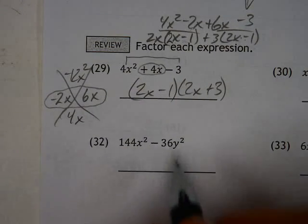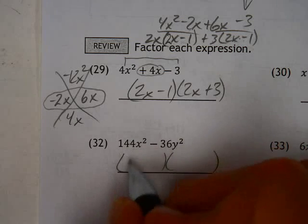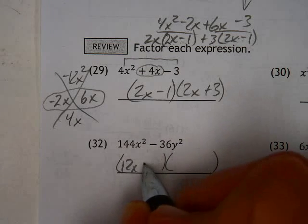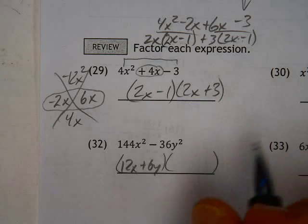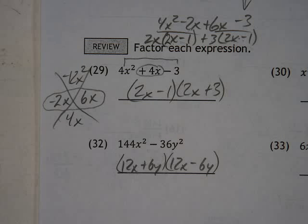This is something like that. I can take the two perfect squares and say, okay, the square root of both of them, this is 12x plus 6y and a 12x minus 6y. Now that's actually not completely factored because I can take some stuff out of here.